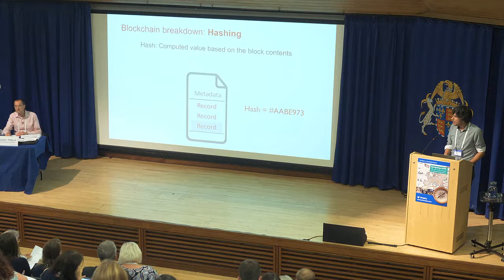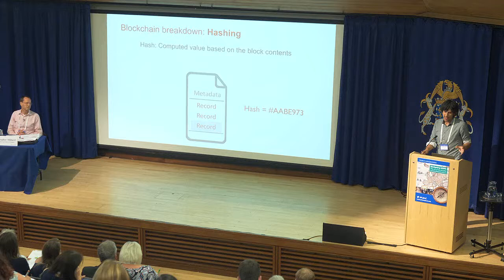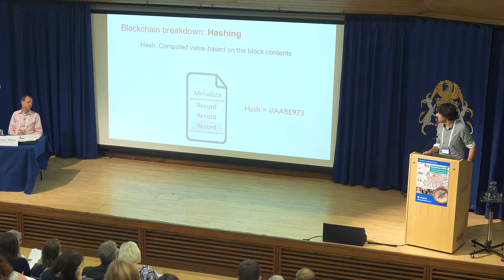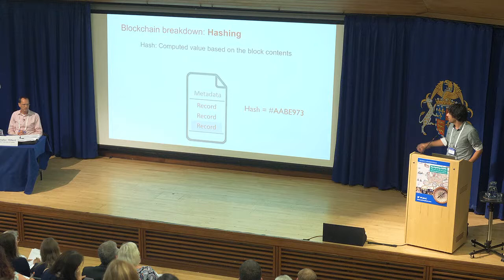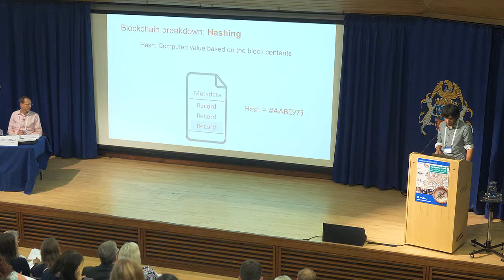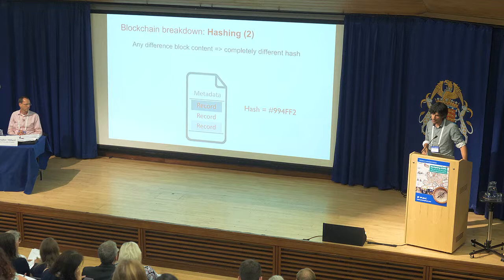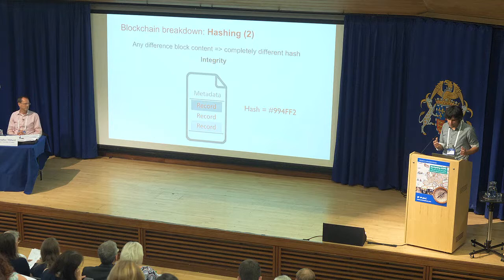Important in a blockchain context is the concept of hashing. A hash function is essentially a function that if you give it a specific input, it will produce the same specific output — the same input always produces the same output. What is used in blockchain is that a hash value is computed over the contents of a particular block. So for this block with three records and some metadata, it might have a particular hash starting with AA. But even the tiniest change to any data in the block will result in a completely different hash — a number one becoming a number two, for instance, creates a completely different hash value. This brings about the integrity of this system, as we'll discuss in a moment.